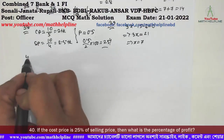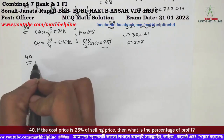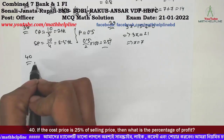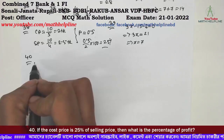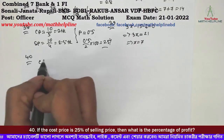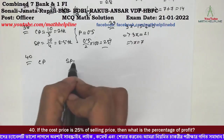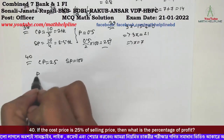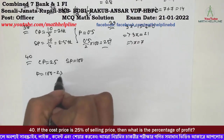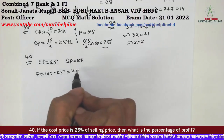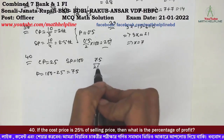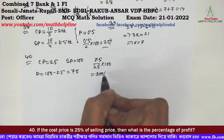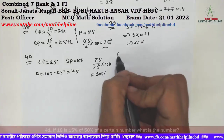Number 43: If the cost price is 25% of the selling price, then what is the percentage of profit? Cost price is 25% of selling price. Profit is 75% of selling price, which is 300% of cost price. Answer: 300%.